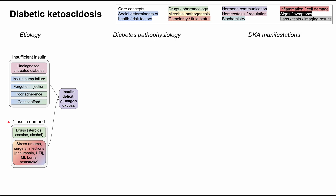Examples of increased insulin demand include drugs — cocaine, alcohol, and corticosteroids all increase insulin demand, and if taken without proper precautions or without increasing insulin, that can precipitate DKA. Stress like trauma, surgery, and infections — specifically pneumonia and UTIs — can also increase insulin demand. Myocardial infarctions, burns, and heat stroke do the same. So it's either insufficient insulin or increased insulin demand from drugs or physiologic stress.